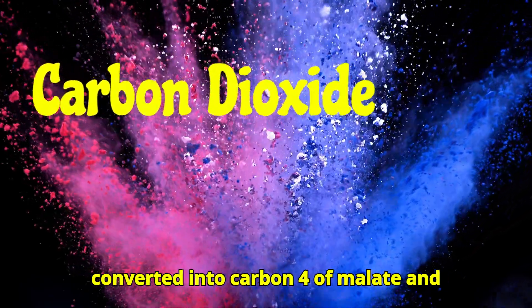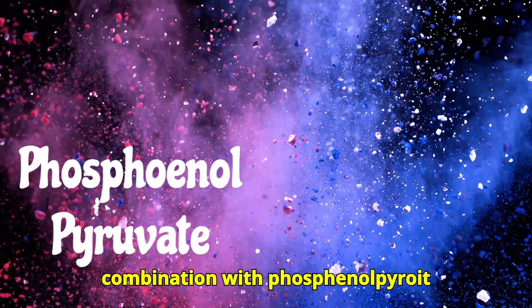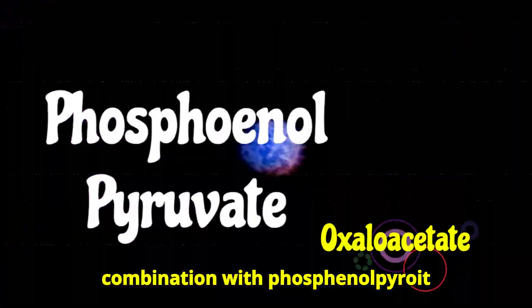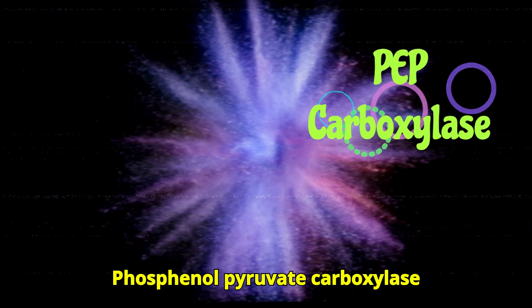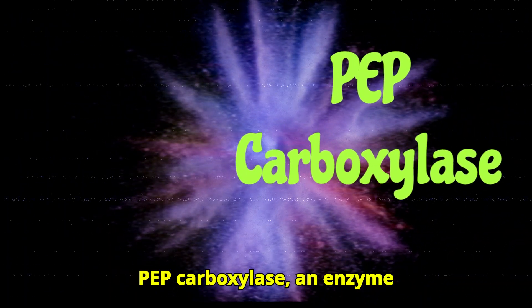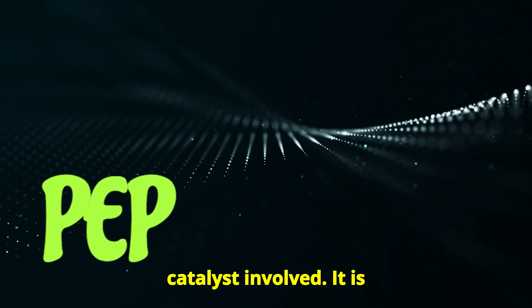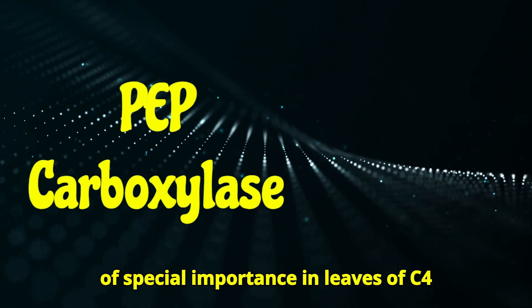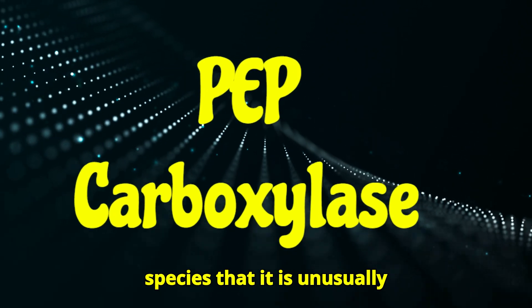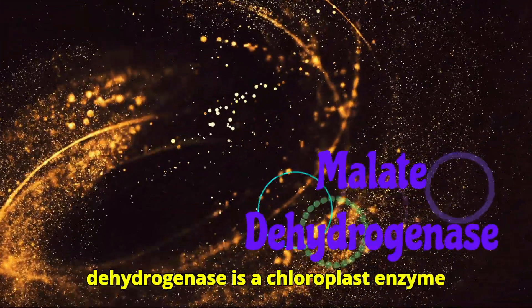The reaction by which carbon dioxide is converted into carbon-4 of malate and aspartate occurs through its initial combination with phosphoenolpyruvate (PEP) to form oxaloacetate and inorganic phosphate. Phosphoenolpyruvate carboxylase (PEP carboxylase), an enzyme present in all living plant cells, is the catalyst involved. It is of special importance in leaves of C4 species, where it is unusually abundant.